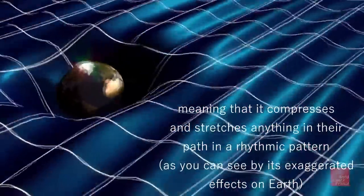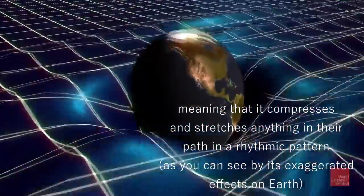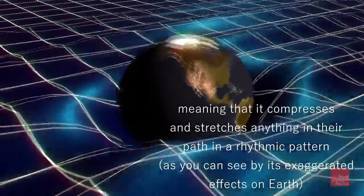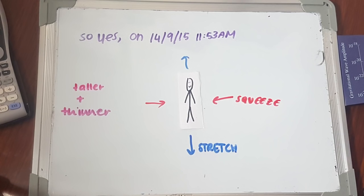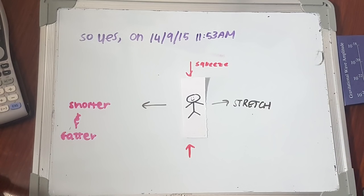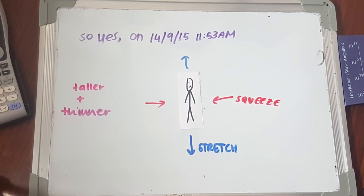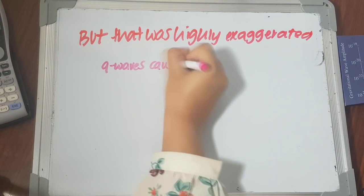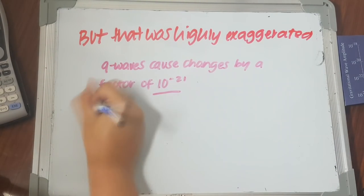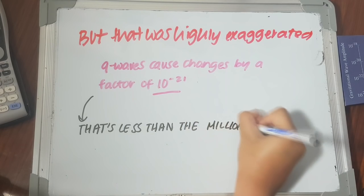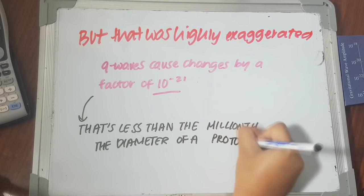Now gravitational waves propagate as a fluctuation of squeezed and stretched space. So yes, on the 14th of September 2015, 11:53 AM, since you are a part of space, you were fatter and thinner and shorter and fatter as it passed through your body. But that fluctuation only causes changes by a factor of 10 to the power minus 21, which is actually less than a millionth the length of a proton. So don't worry about your waist size.